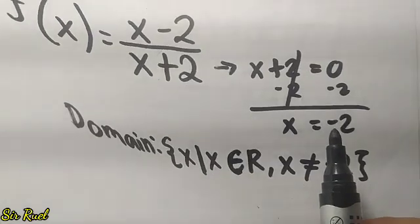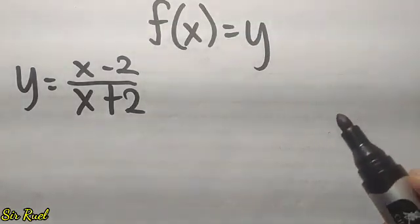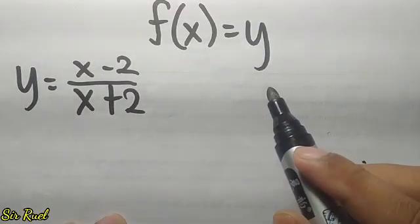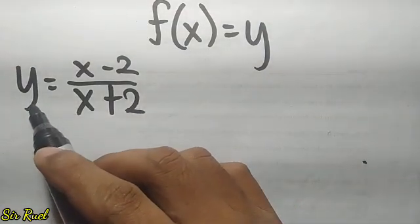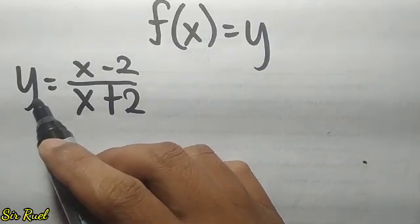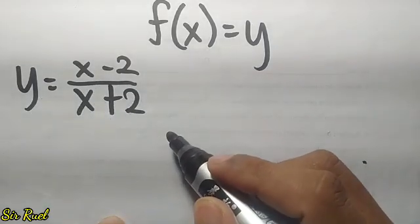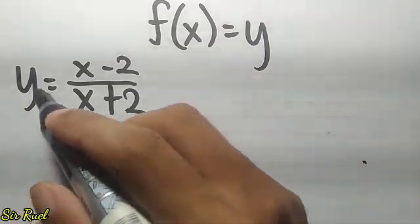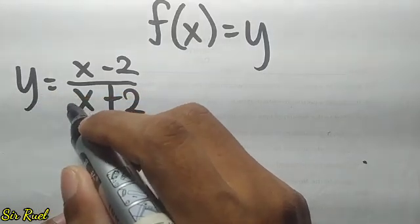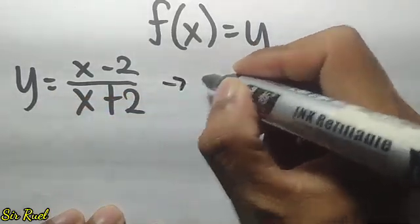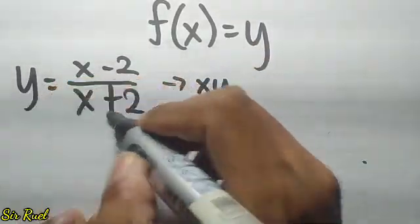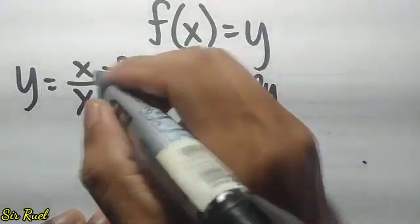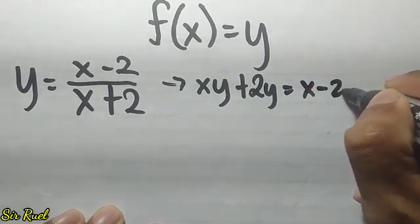Now let's find the range. To find the range, we use f of x equals y, so instead of f of x, it becomes y. We have y equals x minus 2 over x plus 2. To solve this, multiply y and the denominator. So y times x gives xy, and y times 2 gives 2y. Then copy the equal sign and the rest: we have x minus 2.